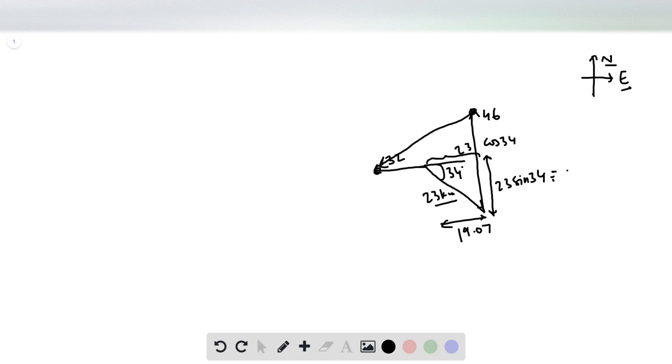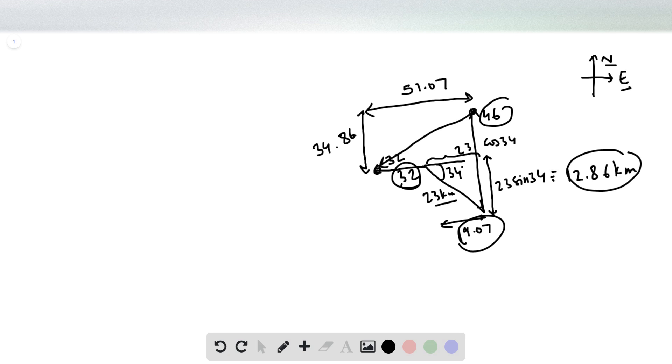Hence, for our resultant vector, the x component is 32 plus 19.07, which is 51.07, whereas the y component would be 46 minus 12.86, which is 34.86 kilometers.